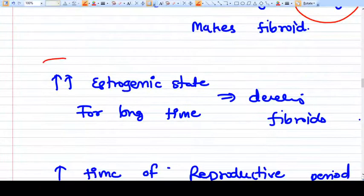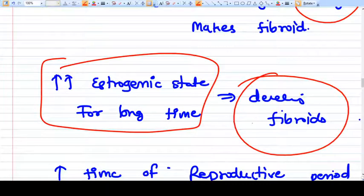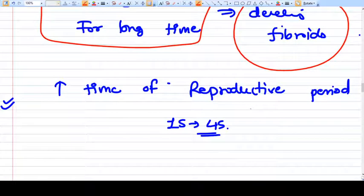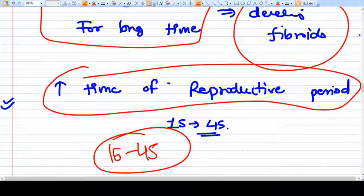Increased estrogenic state for a long time is a risk factor for developing fibroids. Increased reproductive period, for example, if a female has early menarche and late menopause, the total reproductive years in which estrogen is high will be increased. These females are at increased risk of fibroid.